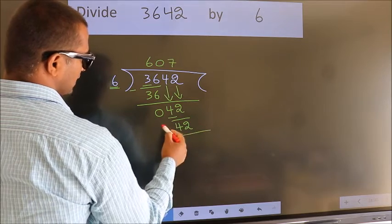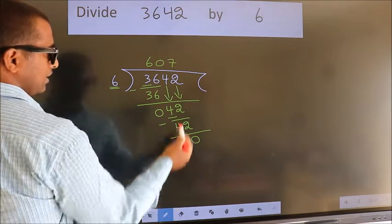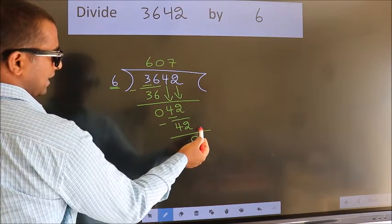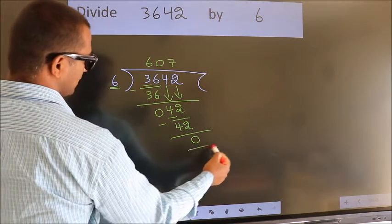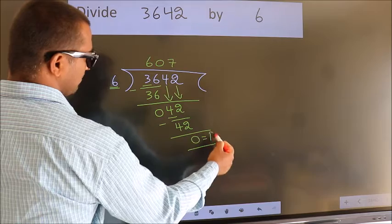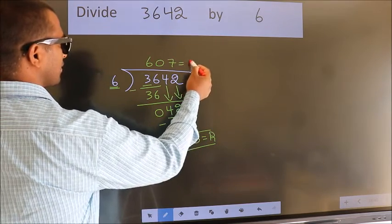Now we subtract. We get 0. No more numbers to bring down, so we stop here. This is our remainder. This is our quotient.